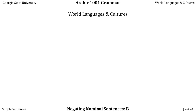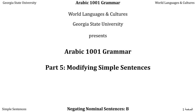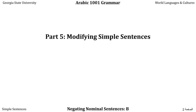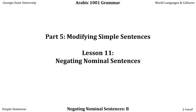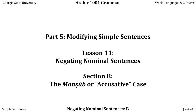The Department of World Languages and Cultures at Georgia State University presents Arabic 1001 Grammar. In this fifth and final part of the course, we discuss modifying simple sentences. In this lesson, we continue to talk about negating nominal sentences, and in this final section we talk about the Mansoub, or accusative case, the third of the three cases used in Arabic.